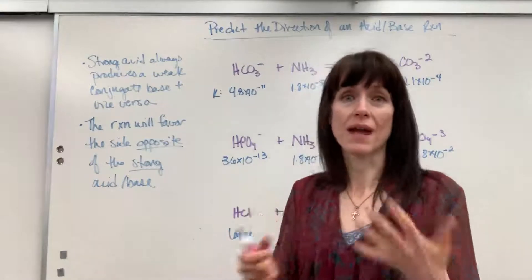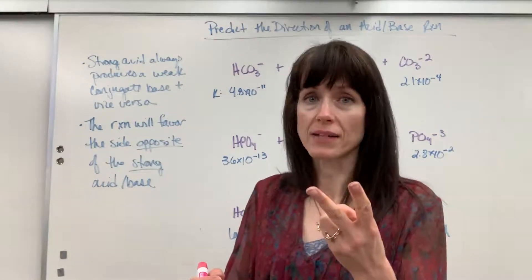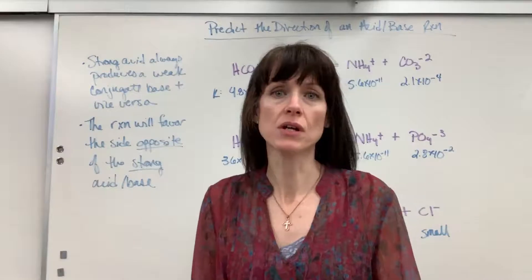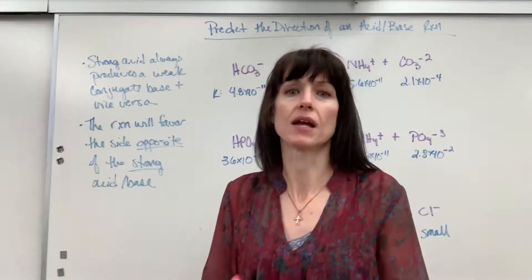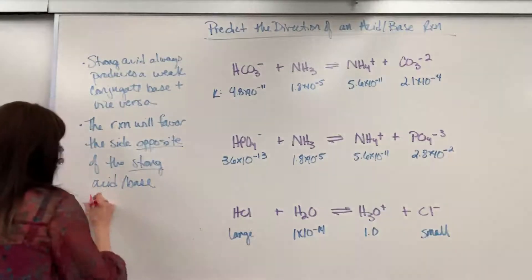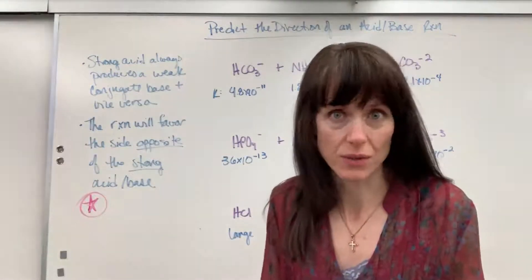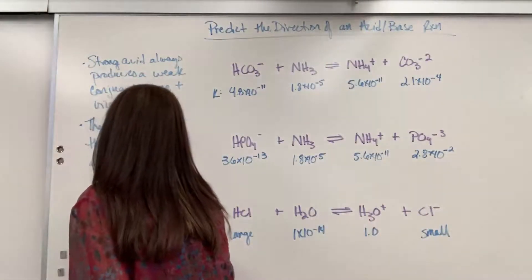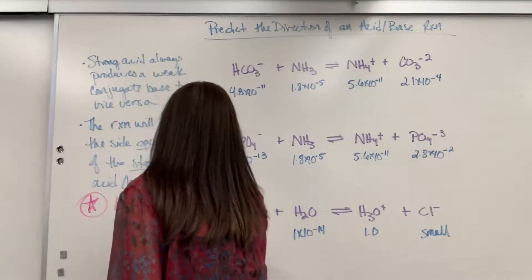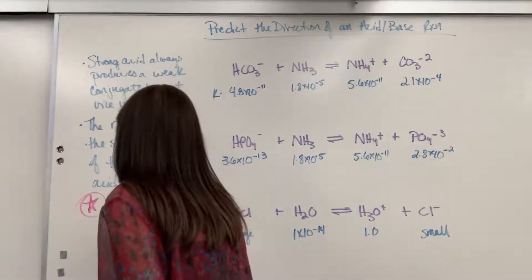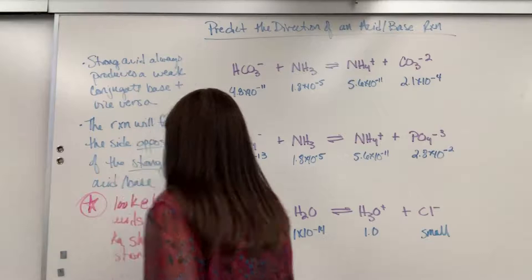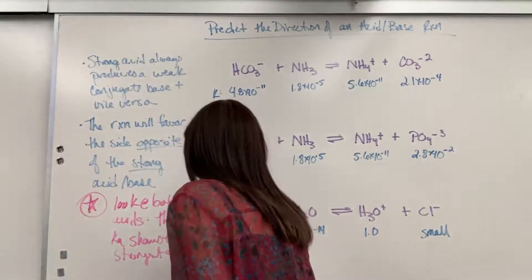When you are comparing, pick either both the acids — the acid and the conjugate acid — or both of the bases. Look at those K values, and whichever one is larger, the reaction will favor the opposite side. Here's the quick method: look at both acids, find the largest Ka — that shows the strongest acid — and it favors the opposite side.